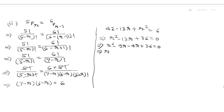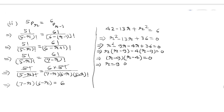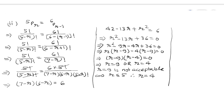So R squared minus 9R minus 4R plus 36 equals 0. Taking R common: R(R minus 9) minus 4(R minus 9) equals 0. Factors are (R minus 9)(R minus 4) equals 0, giving R equals 9 or R equals 4. R equals 9 is not acceptable as R must be less than or equal to 5 in 5PR, where 0 is less than or equal to R is less than or equal to 5. Therefore R equals 4 is our answer.